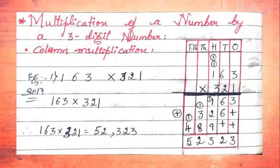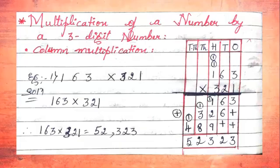Now we multiply with the hundreds digit, which is 3. We write two zeros (plus signs) in ones and tens place. 3 × 3 = 9. Then 3 × 6 = 18: write 8, carry 1. Then 3 × 1 = 3, plus carry 1 = 4. This gives 489, placed in the hundreds row.